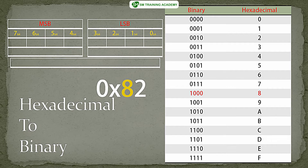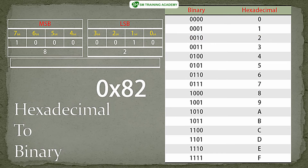First, convert the MSB digit 8 into binary using the table shown on the right. You can see that 8 is 1000 in binary, so we write 1000 for the MSB part. For the LSB digit 2, the equivalent binary representation from the table is 0010, so we write 0010 for the LSB part. Combining these two 4-bit groups gives us the full binary representation of 0x82, which is 0b10000010.